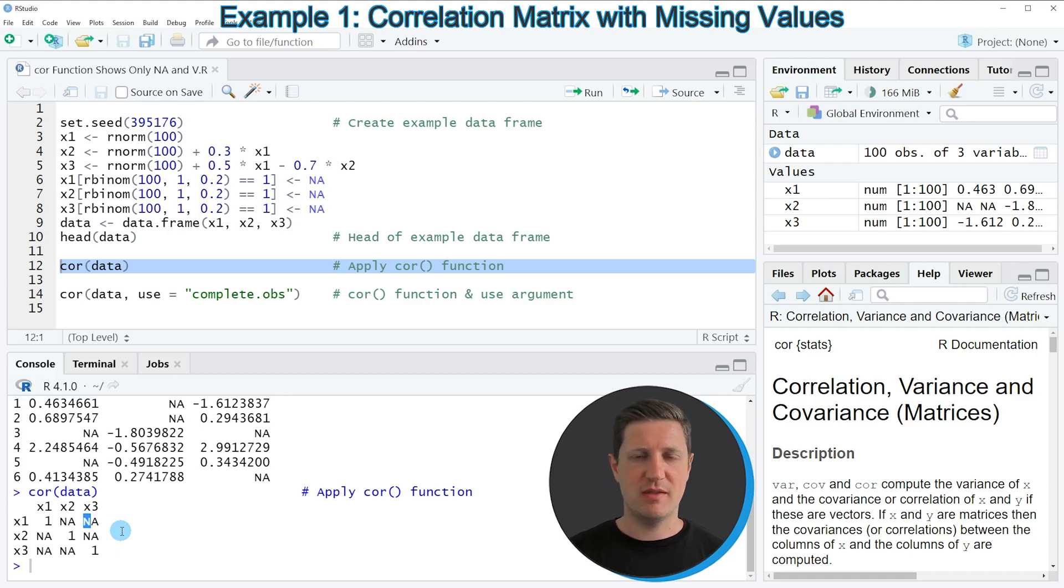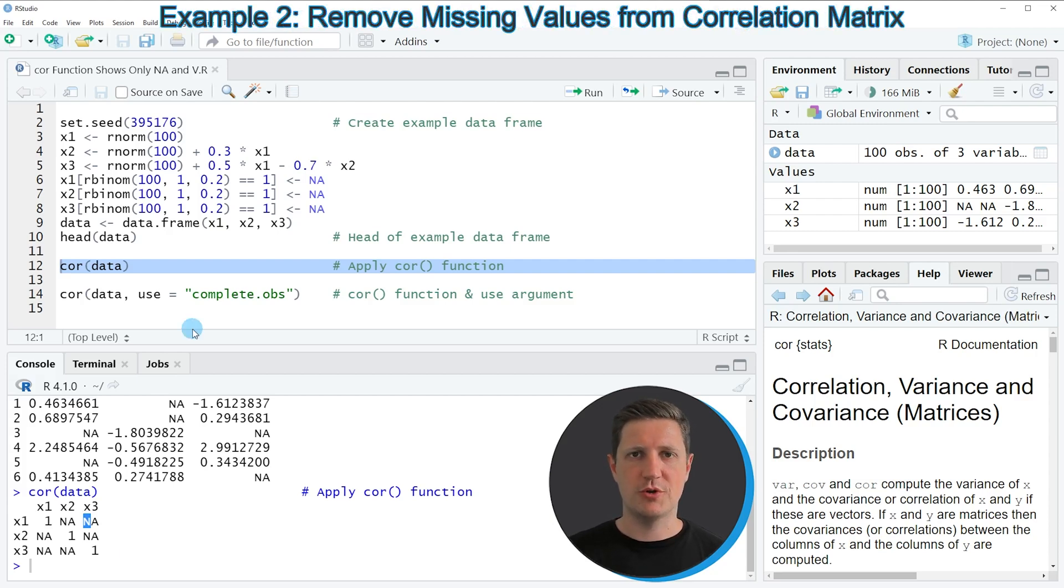The reason for that is that our input data set is containing NA values in the three columns of our data set. In order to avoid that the cor function returns only NA values for the correlations we can use the use argument within the cor function. We can set this argument to the character string complete.obs because this removes all observations in our data frame that are incomplete.